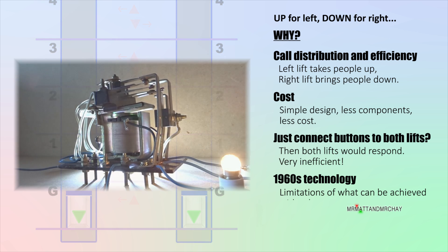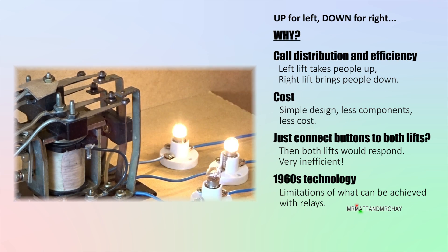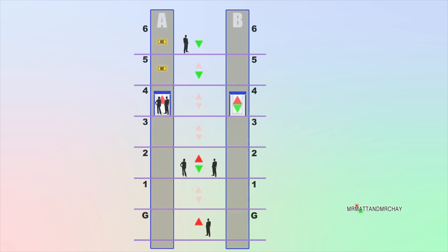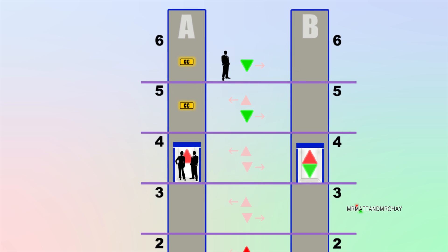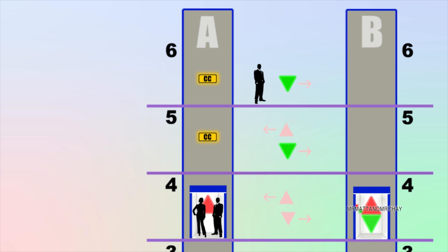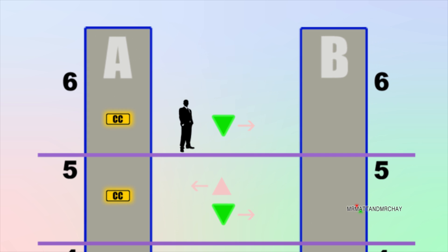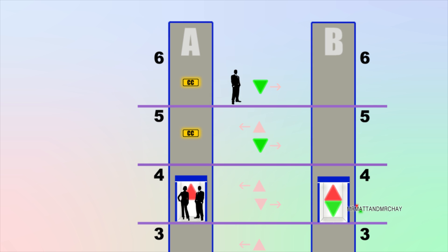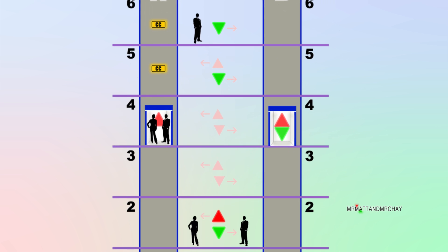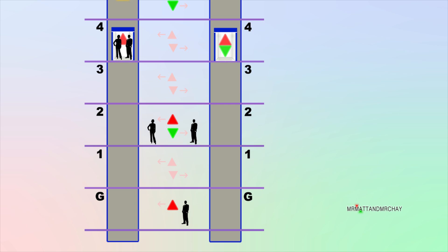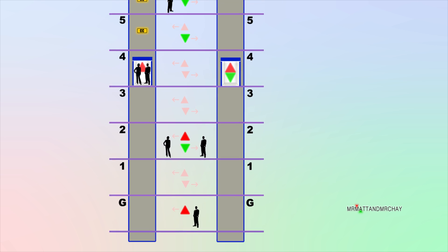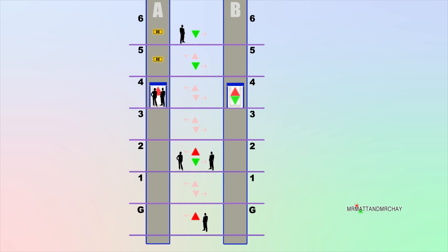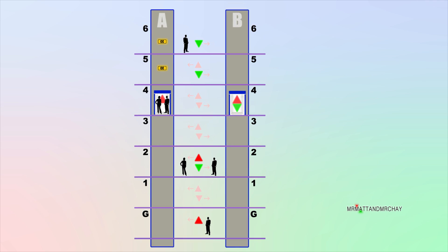This design was from the 1960s so there are limitations. So what's the answer here? Lift A has two car calls to make on the fifth and sixth floor. Then on the sixth floor there is a landing call waiting. It would make more sense for lift A to complete its journey upwards and collect the passenger on the sixth floor at the same time and then lift B to go in the other direction. Possible? Yes. But this would require a far more complex relay logic system. This is not what's going to happen here.